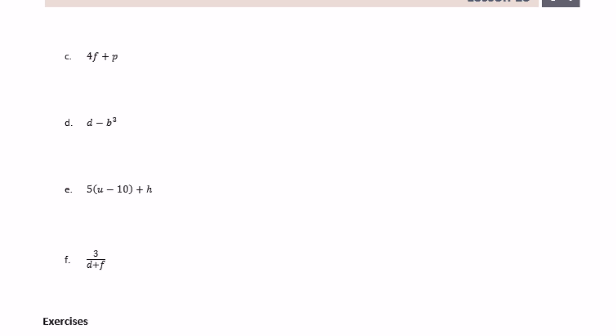Okay, c. 4f plus p. So I would say 4 times f plus p, or we could change it around. So let's say the product of 4 and f, and you could say plus p or I'll say increased by p. Again, many different ways to write that.